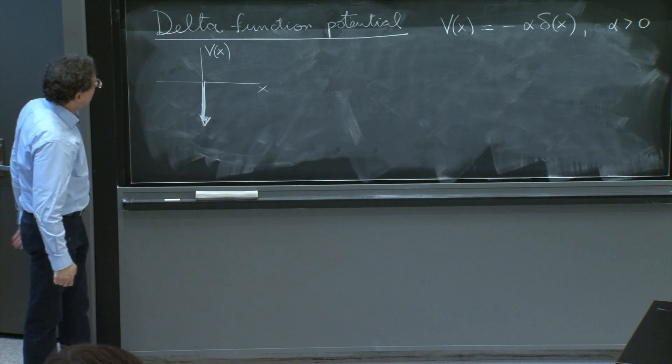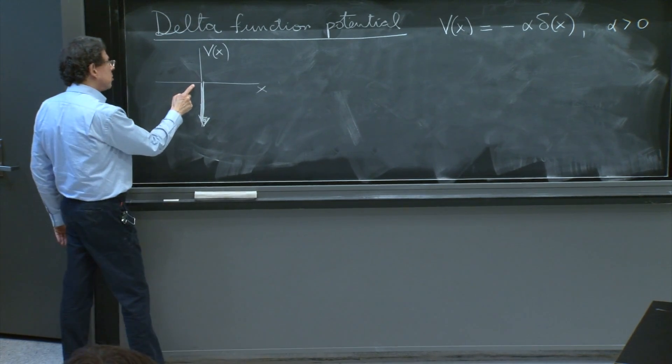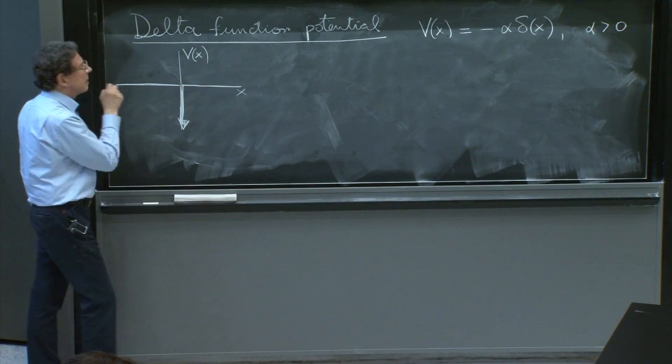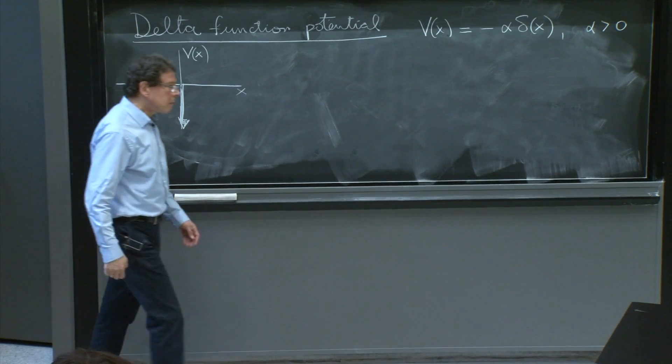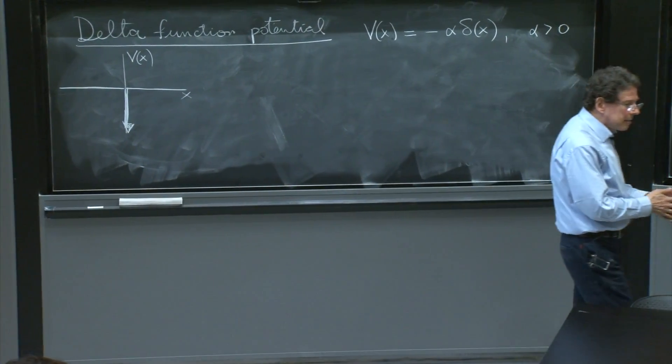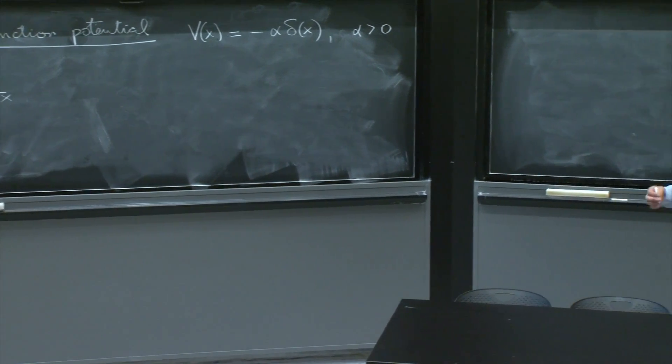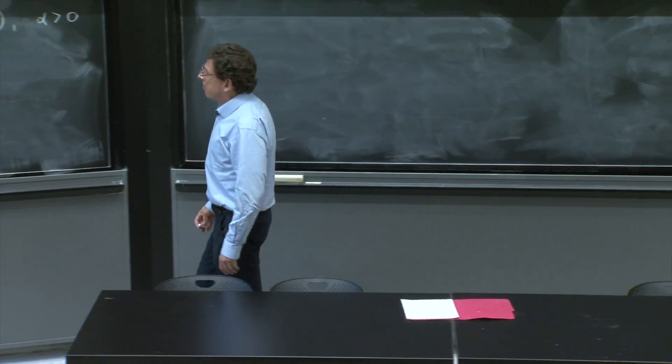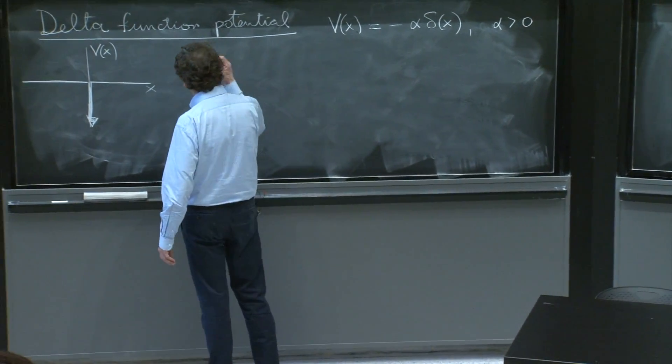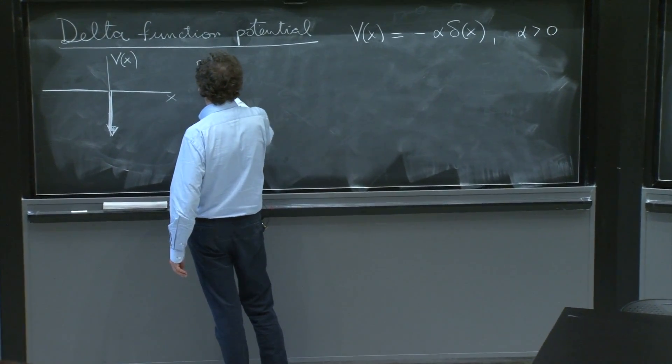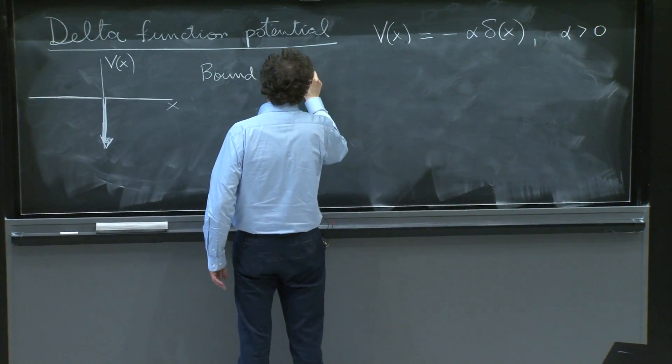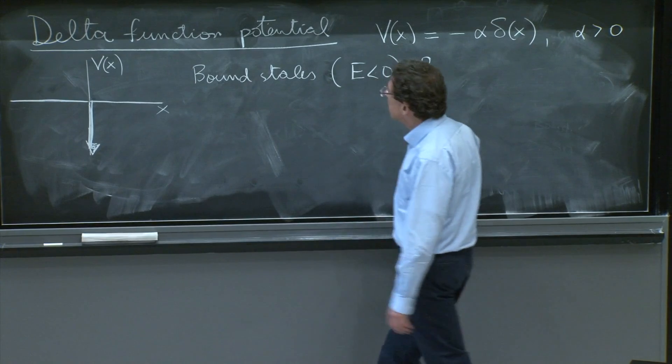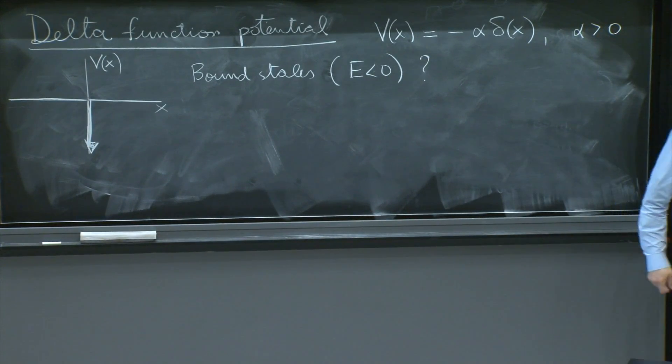At any rate, a delta function potential should be understood as zero everywhere else except at the delta function where it becomes infinite. And there are all kinds of questions we can ask. Are there bound states? What are bound states in this case? Energy eigenstates with energy less than zero. Do they exist?